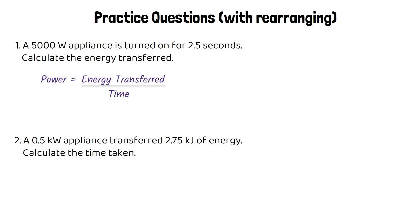For the first question, we substitute into the equation: the power is 5,000 watts, the time is 2.5 seconds. So 5,000 equals energy transferred over 2.5 seconds. If we rearrange that, we get 5,000 times 2.5 equals energy transferred. That gives us an energy transferred of 12,500 joules.